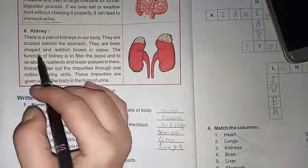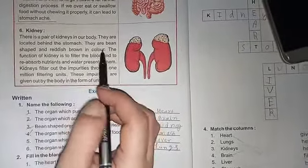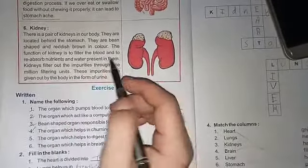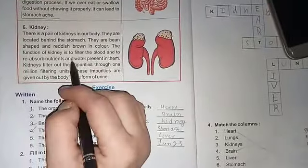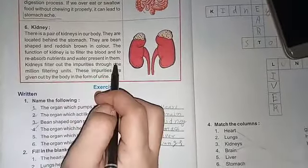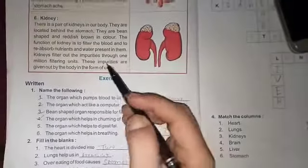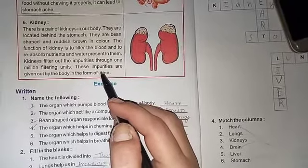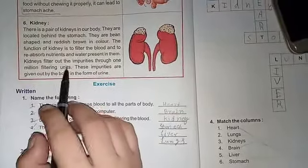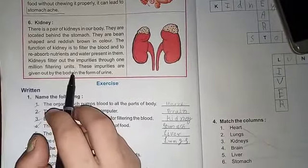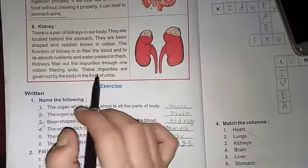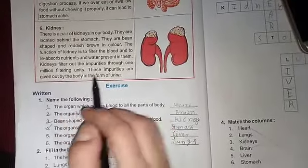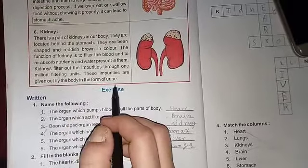They are bean shaped and reddish brown in color. These impurities are given out by the body in the form of urine.